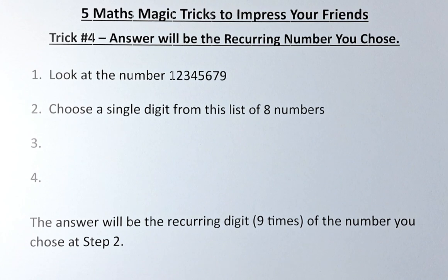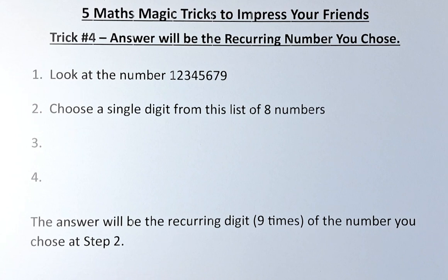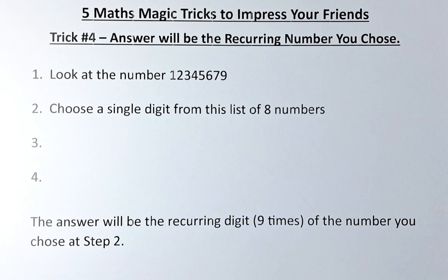The answer of this trick is that it will be the recurring number that you have chosen. Now we are going to look at this number: 12,345,679. It's the numbers from 1 to 9, and the only number that's missing is number 8.